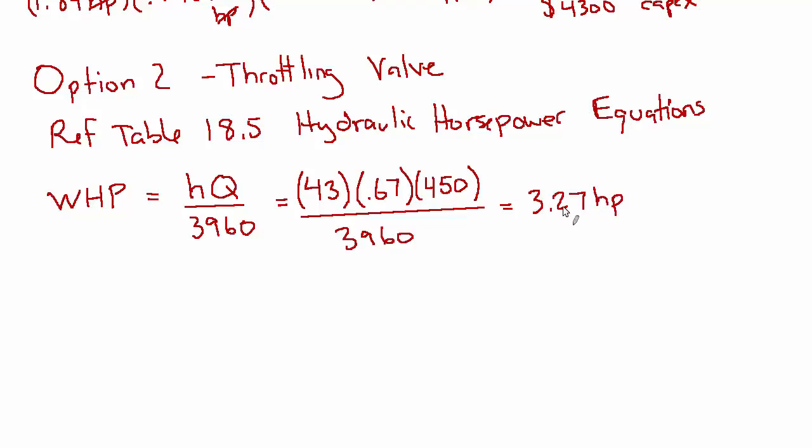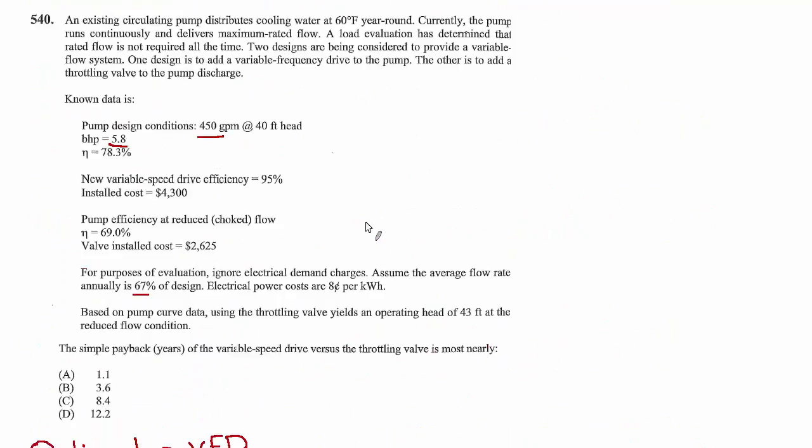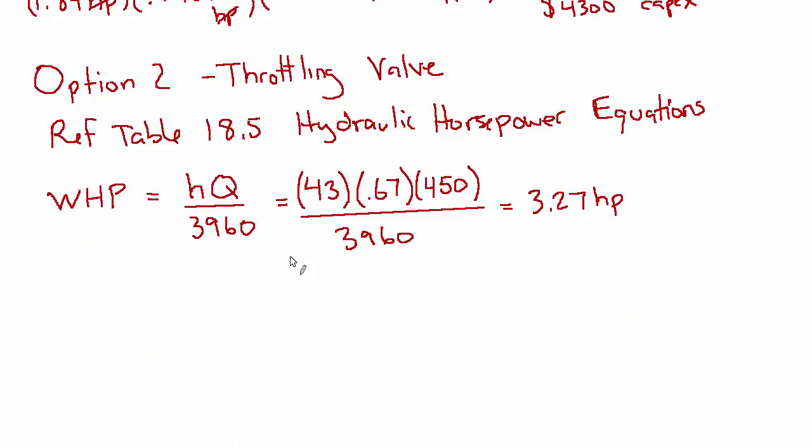And that gives us 3.27 horsepower. And that's the water horsepower. And that is lower than 5.8. So it is worth it, there are going to be savings here. Unfortunately, the efficiency also gets lower in this scenario. It was 78.3% efficient in the original design. But now with the reduced choke flow, it's only 69% efficient. So as we go from water horsepower to brake horsepower, we have to include that efficiency. So the brake horsepower equals the water horsepower divided by the mechanical efficiency of the pump. So that's 3.27 over 0.69. And that gives us 4.7 BHP.